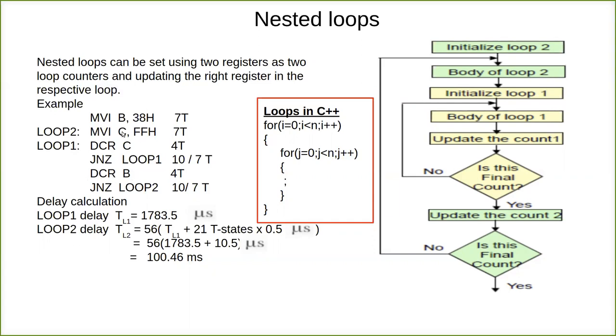So what happens here? C is initially FF, then it keeps decrementing. B is 38 hexadecimal. With B at 38, the inner loop counts up to FF times. Then decrement B, now it becomes 37. Again, this will execute for FF times. Again decrement B, now it becomes 36 and so on. So totally, 38 into FF times, the two loops will get executed.